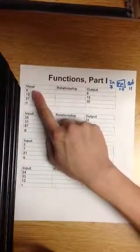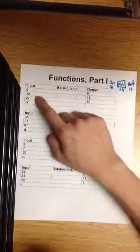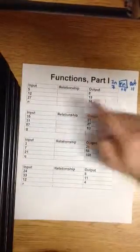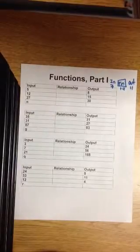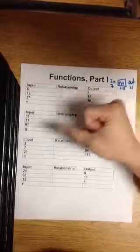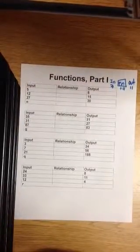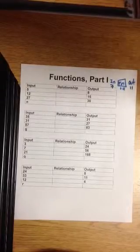You have a 5 that becomes an 8. You have a 12 that comes out as a 15. A 27 becomes a 30. So what is the relationship? What's the function machine going to do to these 5, 12, and 27? Well, it is getting bigger. Bigger numbers are usually caused by adding or multiplication.